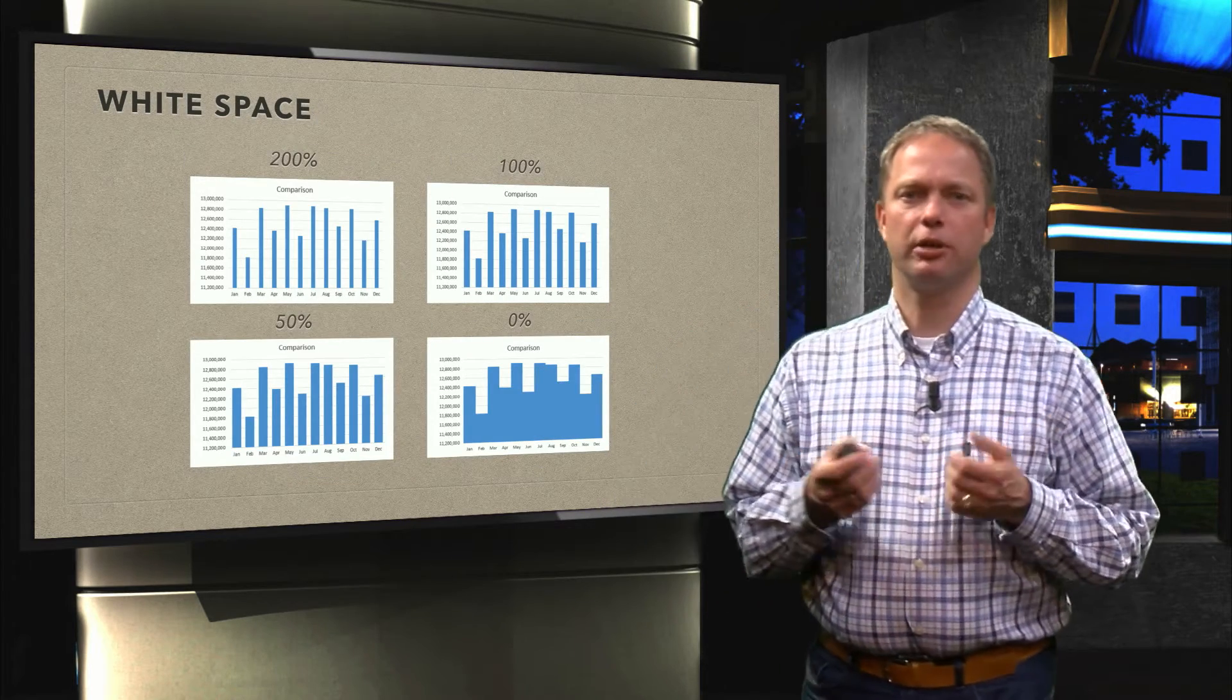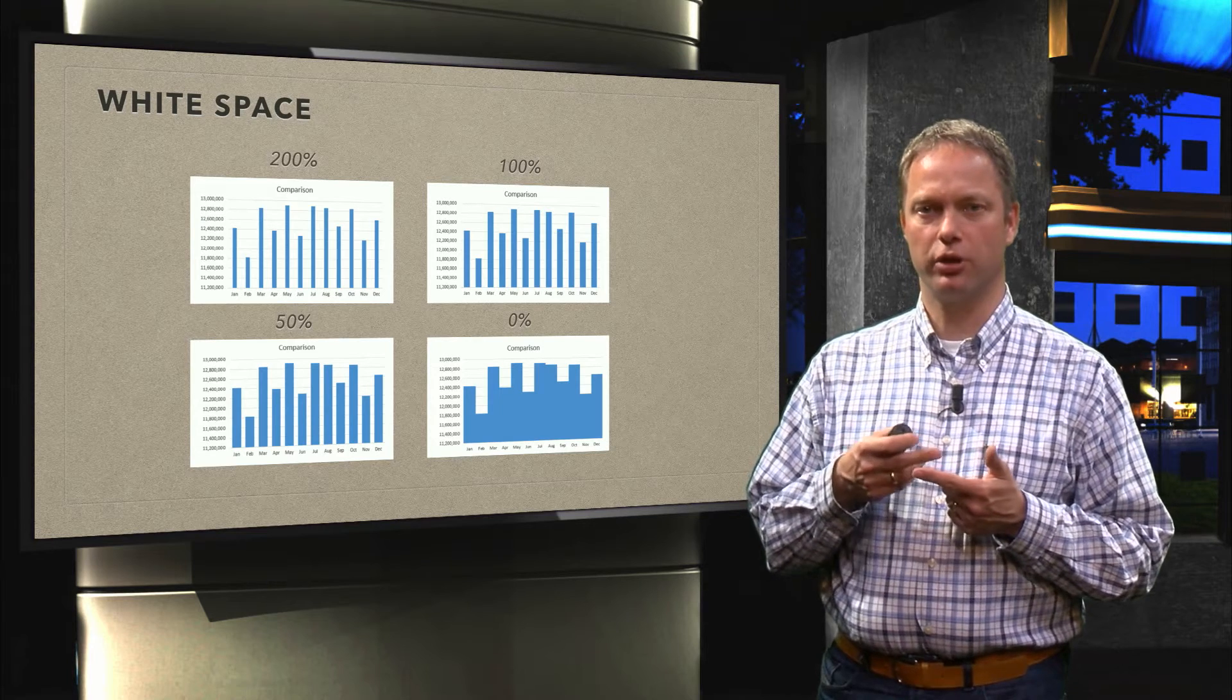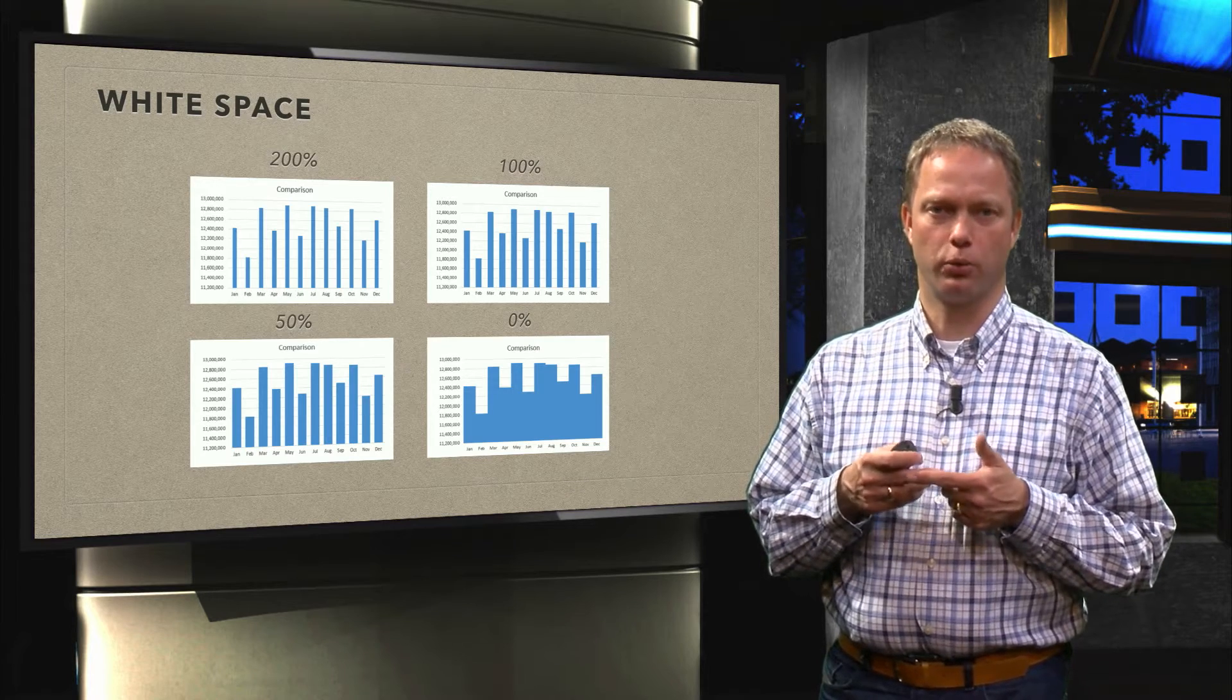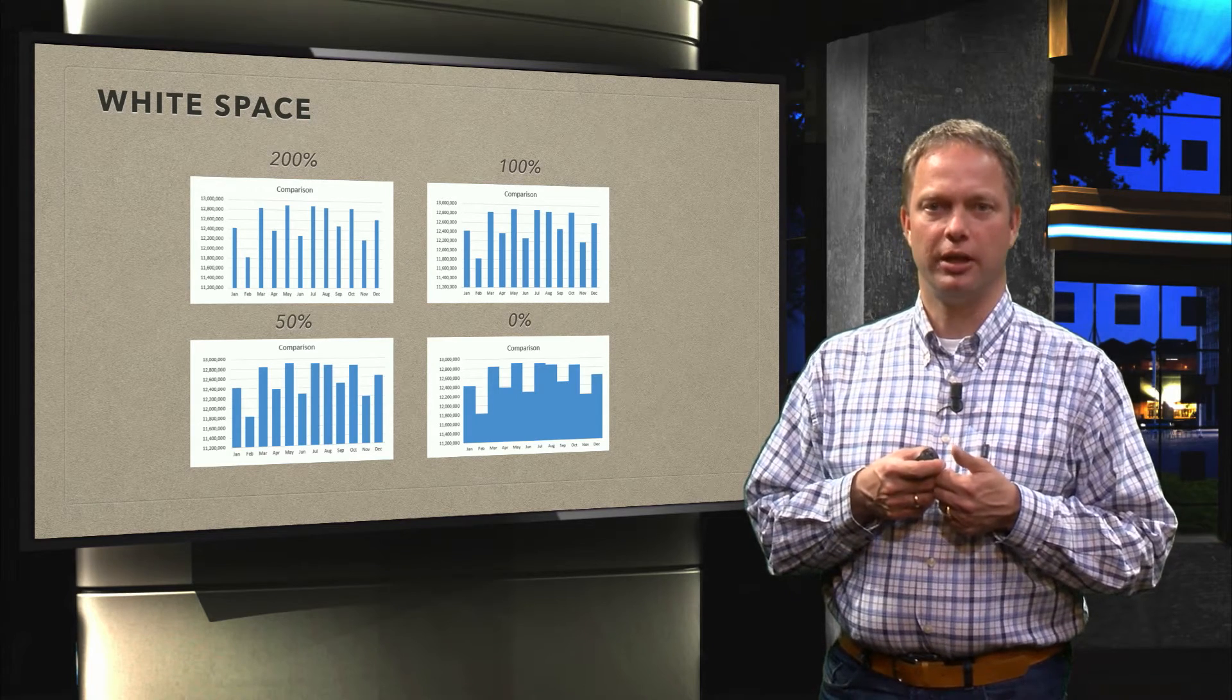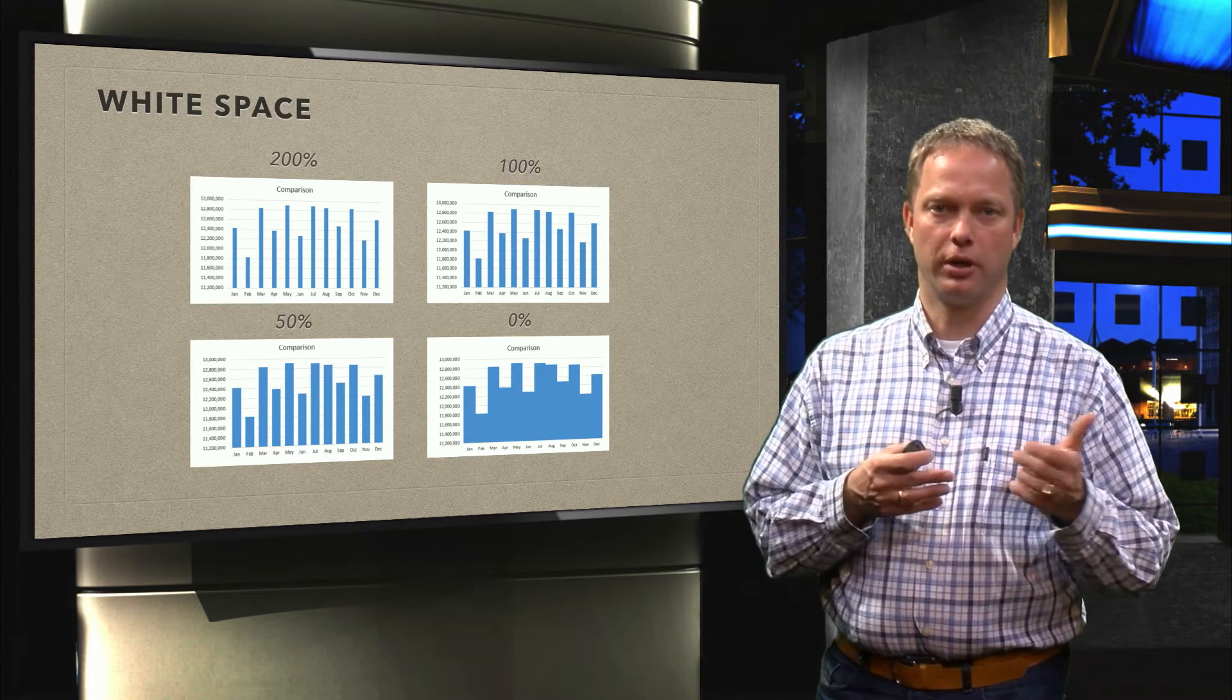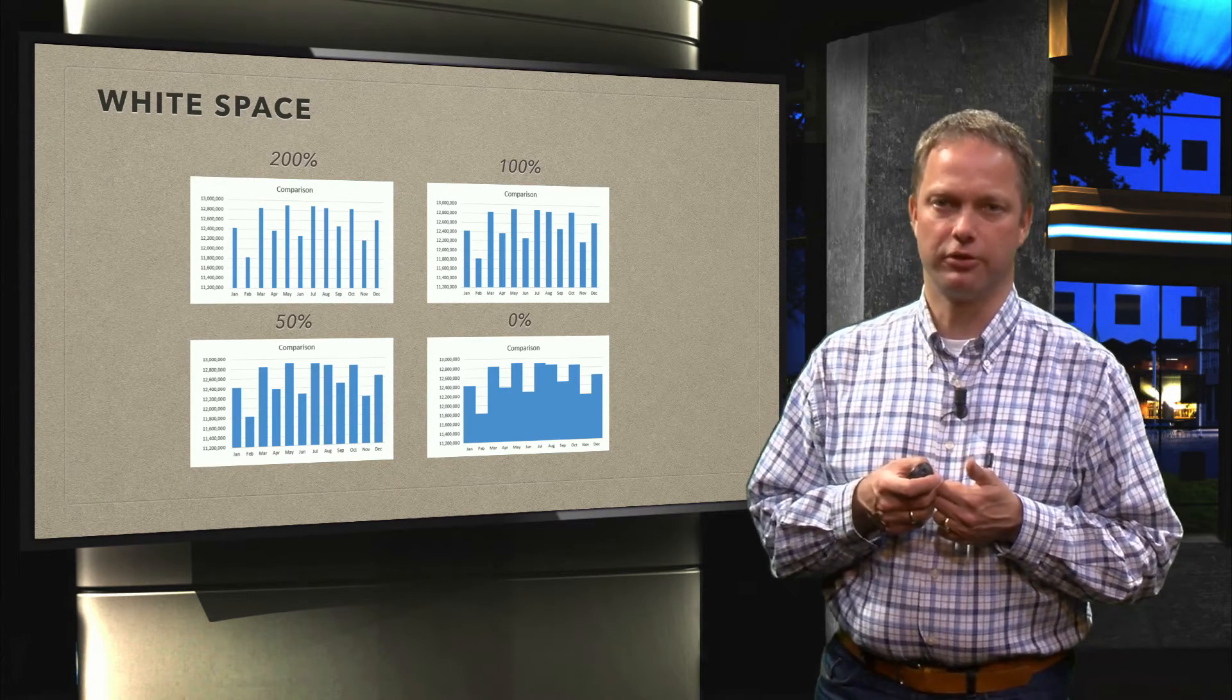Now with tables we saw the importance of white space, and for graphs it is exactly the same. And also there you have a choice. You have to be aware that your spreadsheet software, in this case Excel, will default it for you. And the default is not always right. And here you see some of the different values that are possible. And I like that the white space is about 100 or about 50%. And I would just like to show you in Excel how you can influence the white space between the different columns.